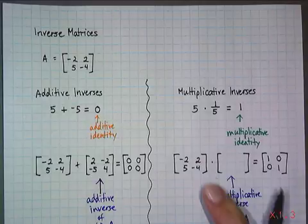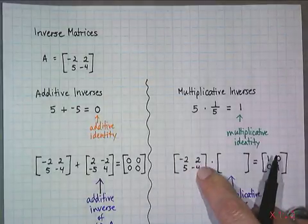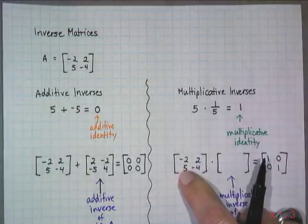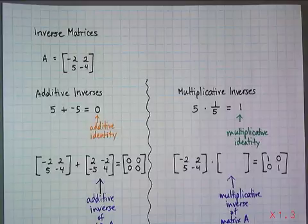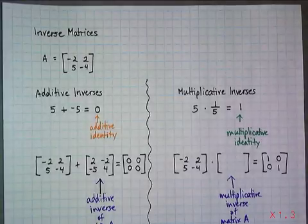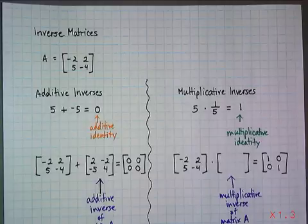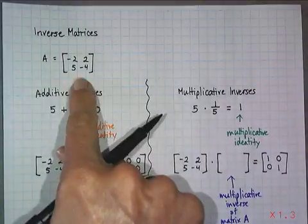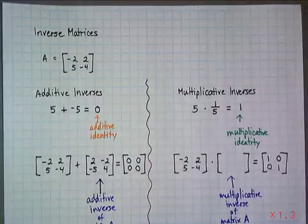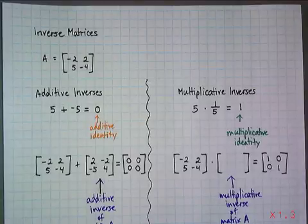Remember you multiply the A times D terms together and subtract B and C. So I'm going to write negative 2 times negative 4 minus 5 times 2. Negative 2 times negative 4 is 8, and 8 minus 10 is negative 2. So the determinant of my original matrix A is negative 2.